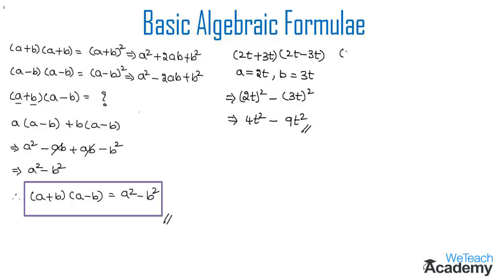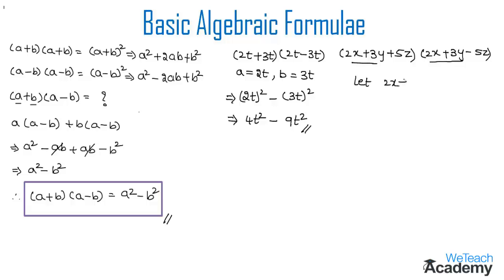Moving to the next example, we have (2x + 3y + 5z)(2x + 3y − 5z). We observe that there are two common terms in both products, which are 2x + 3y. So let us consider 2x + 3y as p. By replacing 2x + 3y with p, the expression becomes (p + 5z)(p − 5z).